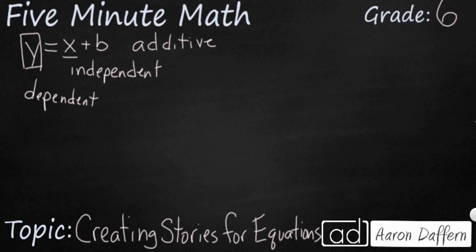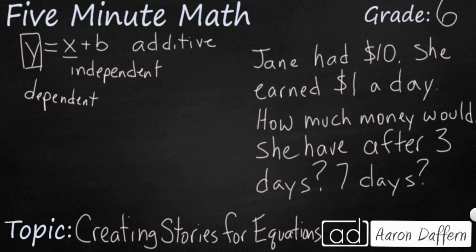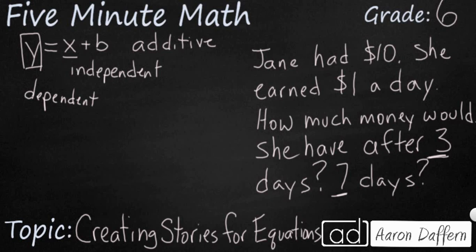Now how can we write a story problem that matches that type of equation? Here's a problem that shows this relationship: Jane had ten dollars. She earned one dollar a day. How much money would she have after three days and after seven days? That's going to match our equation because it has the three components we're looking for. First, it has our dependent variable — the y — and that's what we're looking for with either the three or the seven, because that amount of money she has is dependent on the interaction between the independent variable and the amount of money she starts with.